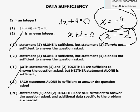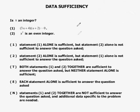They tell us that x squared is an even integer. Now, is that sufficient? If I know that x squared is an even integer, do I know whether x is an integer?